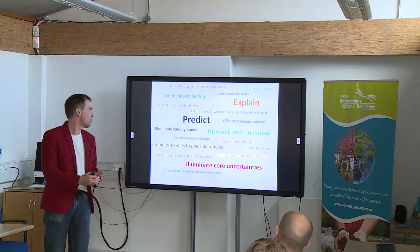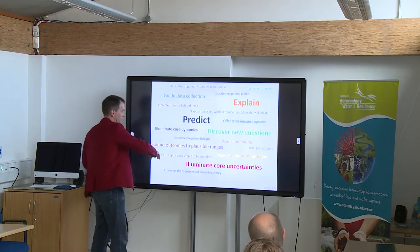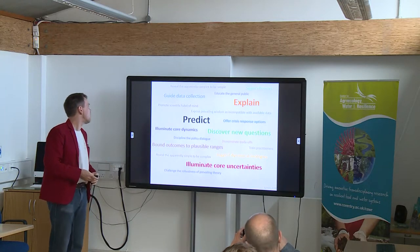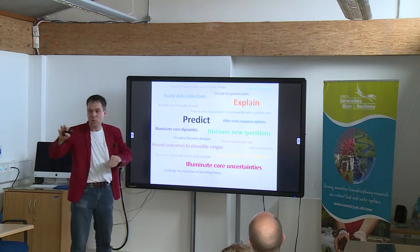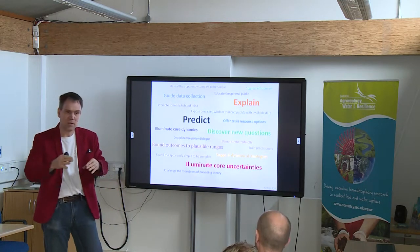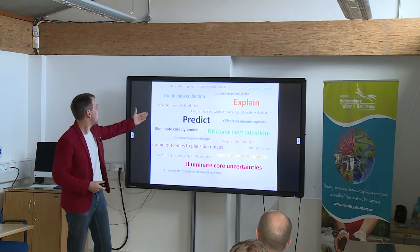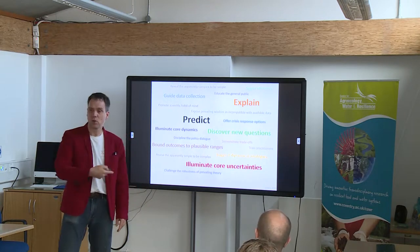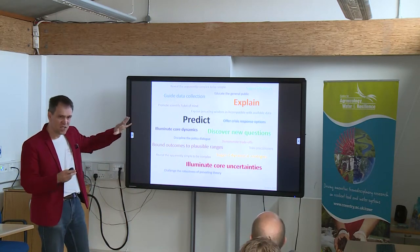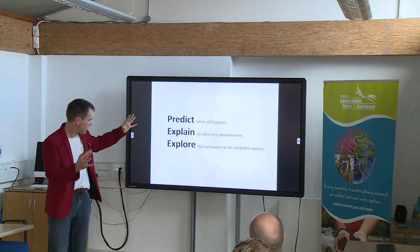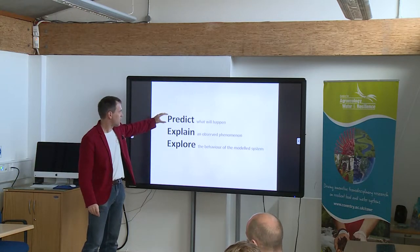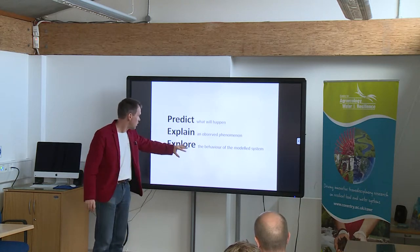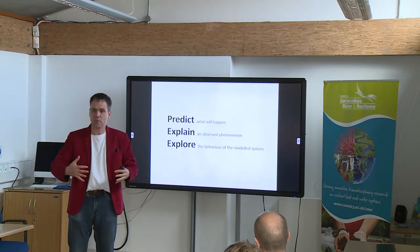You want to guide future data collection — the model can inspire you to say 'these are the places of interest, this is where you should be looking.' Where are the uncertainties in the system? The model can help with all of these types of questions. You can synthesize all of those things into essentially three categories: model because you want to predict what will happen, because you want to explain something that has happened, or because you want to explore the range of behaviors possible in the system.